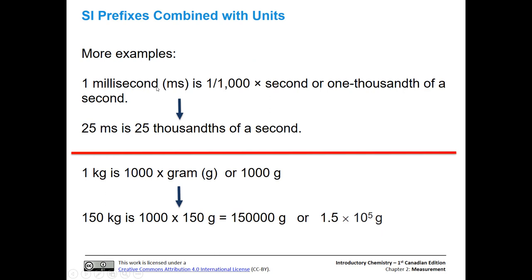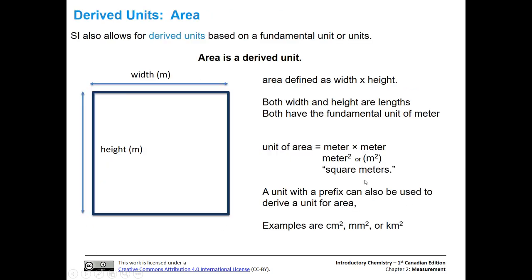What about something that is smaller? A millisecond is one one-thousandth of a second. If we have 25 milliseconds, then we have 25 thousandths of a second. A little bit bigger than just the one millisecond, but still a very small quantity. A kilogram is 1,000 grams. If we have 150 kilograms, then we're going to have to multiply 1,000 times that 150, and we're going to get 150,000 grams or 1.5 times 10 to the fifth grams. You can see in this case that the kilogram is a much better unit for that quantity.